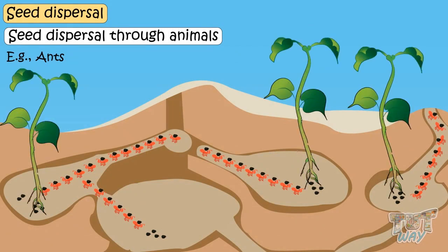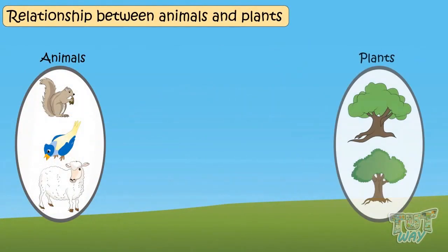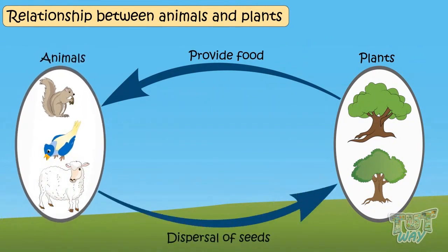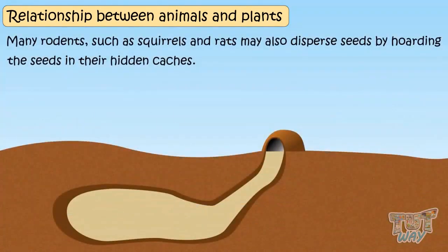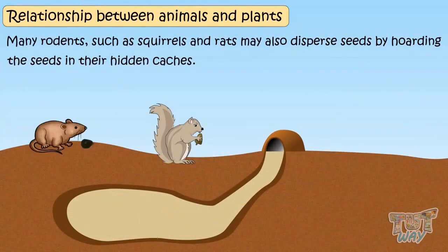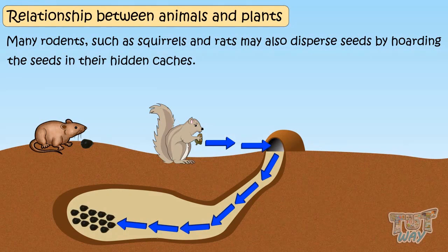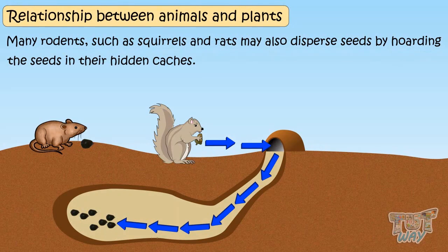So there is a relationship between animals and plants. Plants provide food to animals, and animals help disperse the seeds of plants to distant and different locations, and help them grow into new plants. Many rodents, such as squirrels and rats, may also disperse seeds by hoarding the seeds in their hidden holes, which remain well protected from other seed predators, and some are left uneaten and grow into new plants.